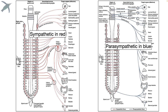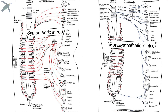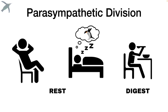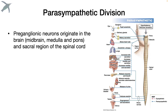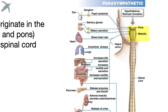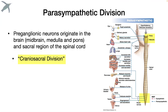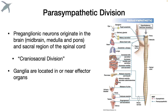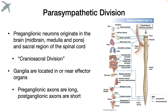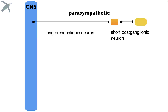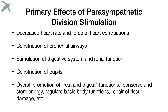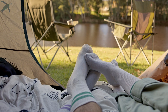Here you can see the sympathetic nerves in red and the parasympathetic nerves in blue. The parasympathetic division is known as the rest and digest system. The preganglionic neurons originate in the midbrain, the medulla, and the pons, as well as the sacral region of the spinal cord — so you might see this referred to as the craniosacral division. The ganglia are located either in or near the effector organs, meaning the preganglionic neurons are long and the postganglionic neurons are short. The primary effects relate to what the body does at rest or during normal, non-stressful activities.